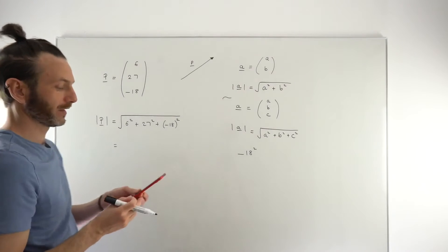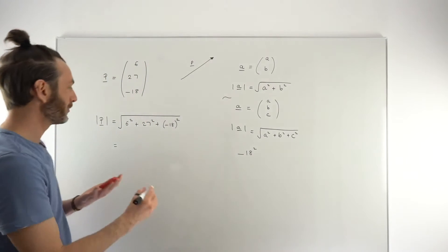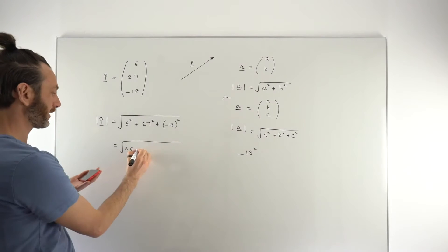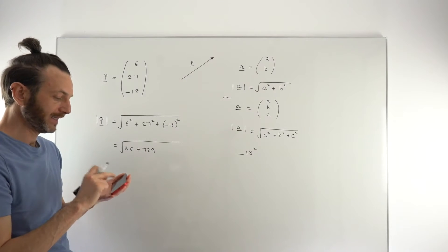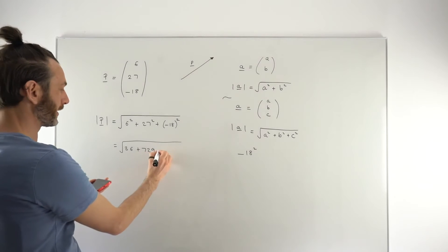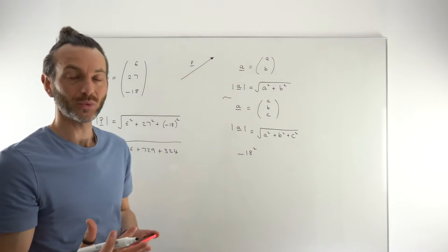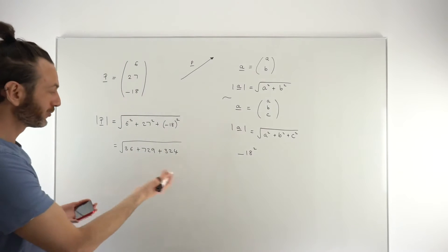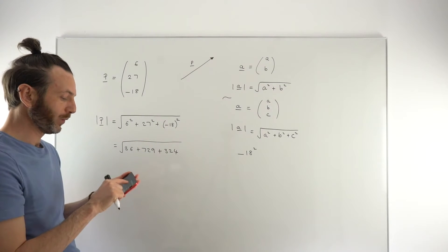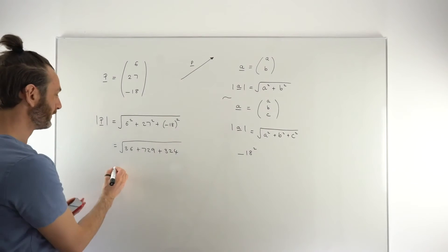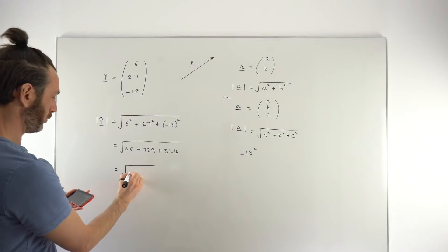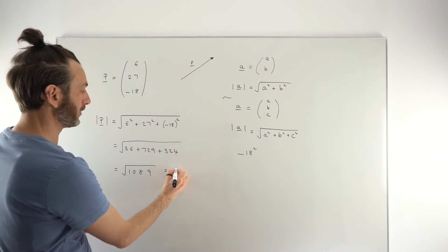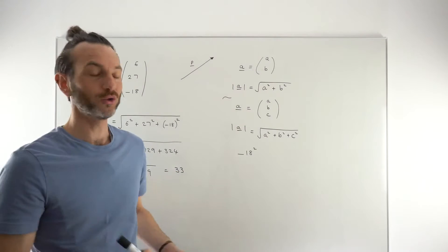This is a calculator question — the numbers are quite high for non-calc. Breaking it down: 6² = 36, 27² = 729, and (−18)² = 324 (you can just enter 18² since it gives the same positive value). In these questions you'd expect the magnitude to come out as a whole number by the design of the question — if it doesn't, something has gone wrong. Adding the values: 36 + 729 + 324 = 1089. Square rooting that gives 33, and that is the final answer.